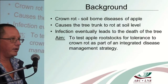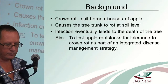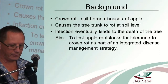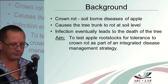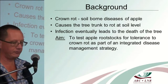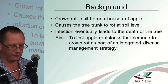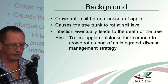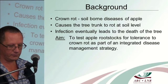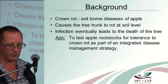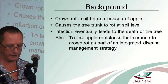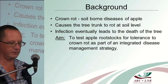The background: crown rot is a soil-borne disease of apple trees and it causes the tree trunk to rot at soil level. Infection eventually leads to the death of the trees. The aim of this study was to test the apple rootstocks for tolerance to crown rot as part of an integrated disease management strategy.